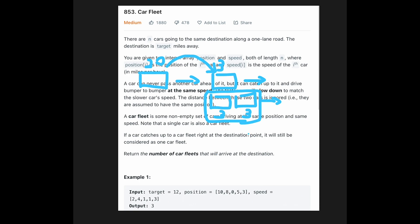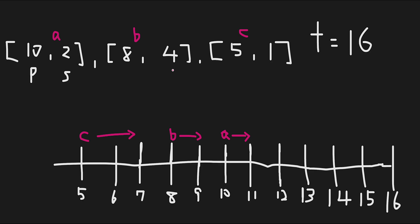This is a slightly complicated problem, but once you understand the question exactly, it's not difficult. Let me explain how to solve it with visualization. First, I create a position-and-speed combination for all cars and sort them in descending order of position. So now A is at 10, B is at 8, C is at 5, and all cars are going in the same direction trying to reach the goal at 16. Every time step, A moves 2, B moves 4, and C moves 1.